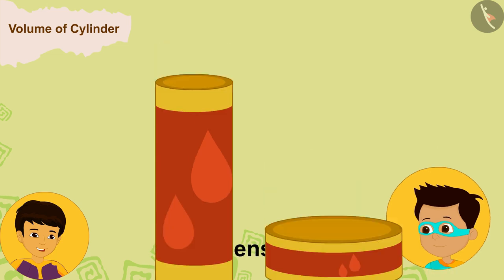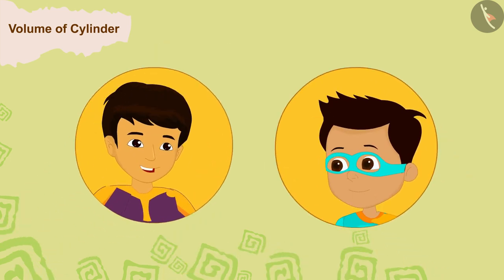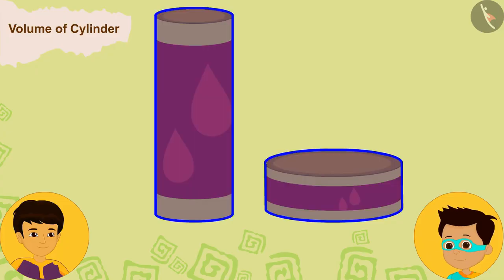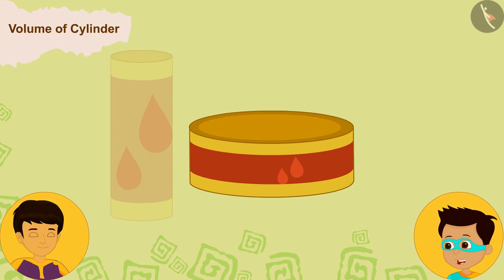Both Captain Thomas and Captain Manas determined the dimensions of their respective boxes. Both the boxes are cylindrical. The radius of the base of this shorter box is eight centimeters and its height is seven centimeters.